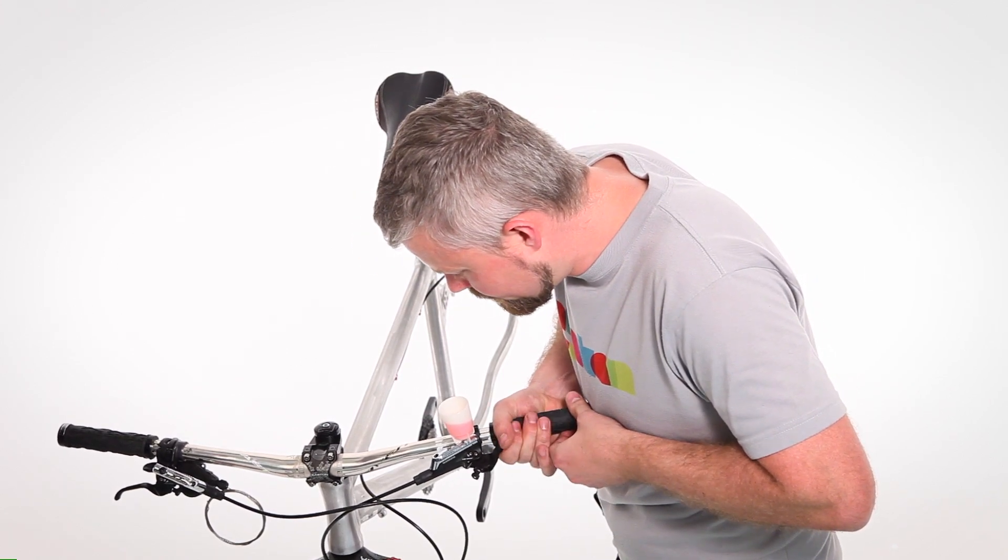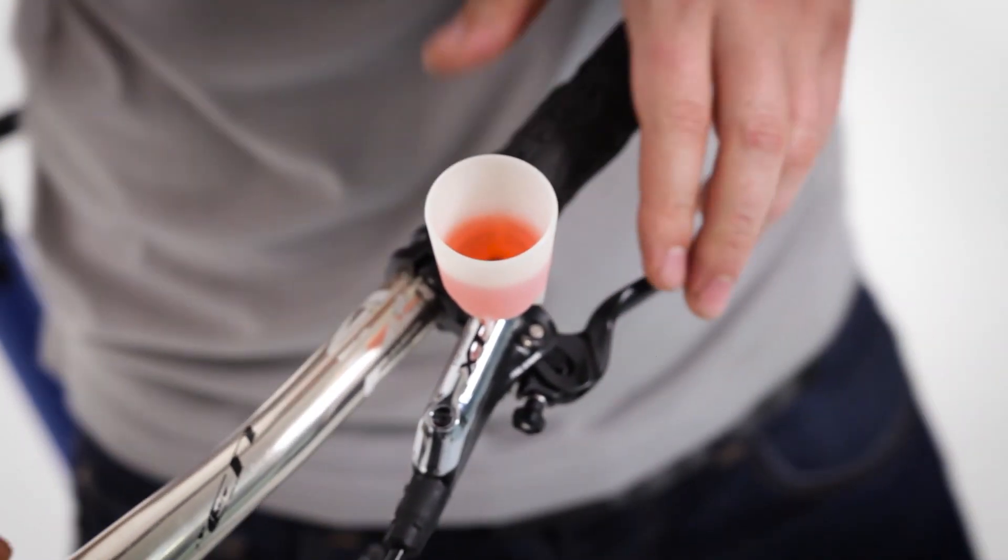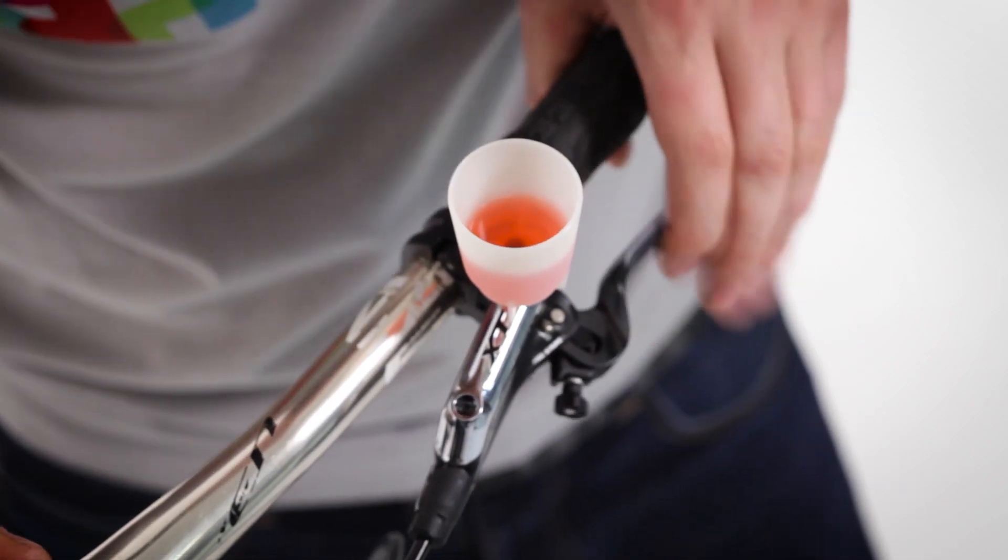Try pulling the lever all the way back to the bars. Give it a little flick and flick the hose as well to try and agitate any trapped bubbles out of there.